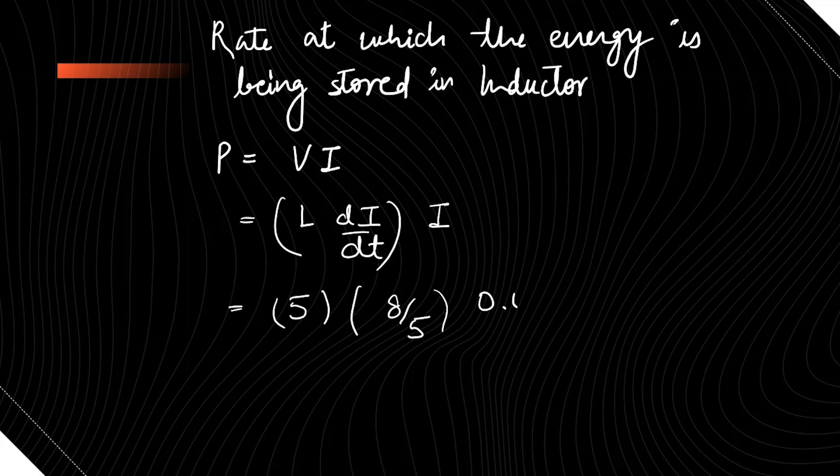And this I is given as 0.4 ampere. So we can cancel out this 5 with 5, so this comes out to be 3.2 watt. So this is the rate at which the energy is being stored in the inductor.